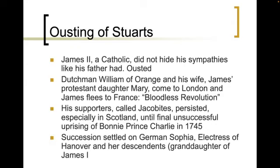Now succession settled on a German, Sophia Electress of Hanover, and her descendants — otherwise the granddaughter of James I — and you're going to start seeing the German side coming into the Georges in the 1700s.